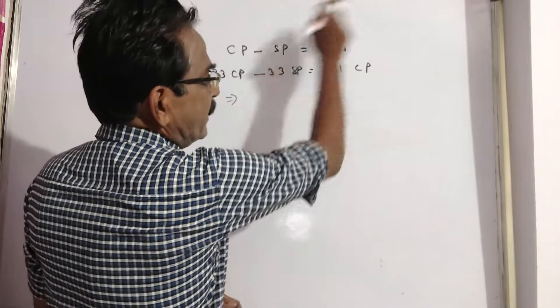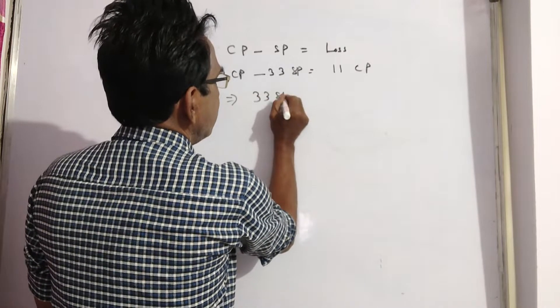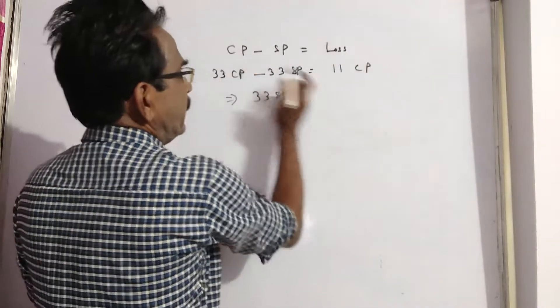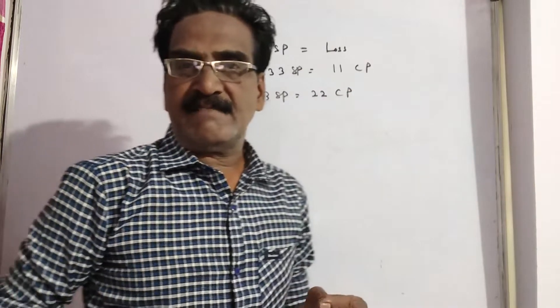it implies 33SP equals 33 minus 11, which is 22CP. So after arriving at this equation,